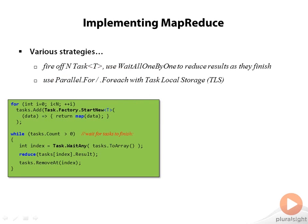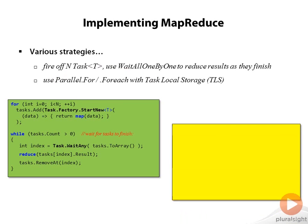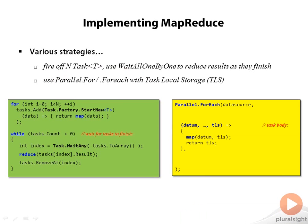Let's look at an example. Here we see a parallel ForEach loop with the usual two parameters: the data source, and then the lambda expression denoting how to process that particular piece of data.